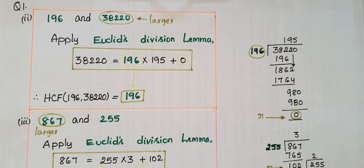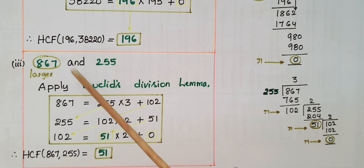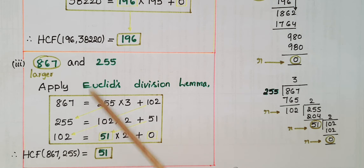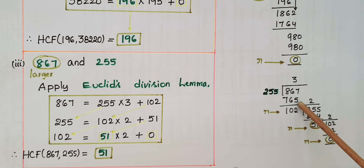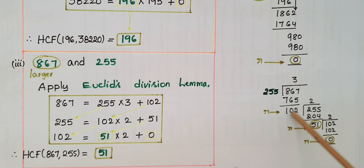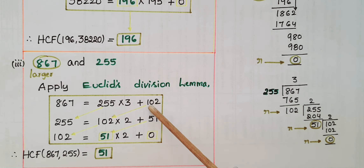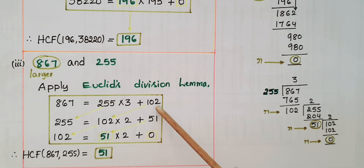The next problem is 867 and 255. Apply Euclid's division lemma. Here 867 is the larger number. Dividing 867 by 255: 255 threes are 765, then 867 minus 765 gives a remainder of 102. So 867 is equal to 255 into 3 plus 102.